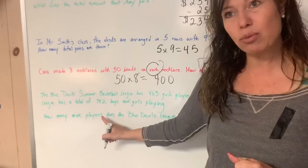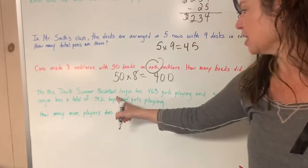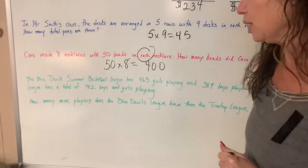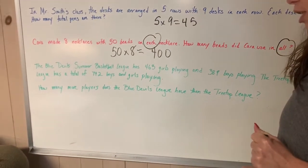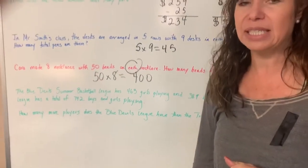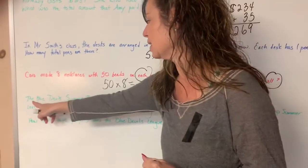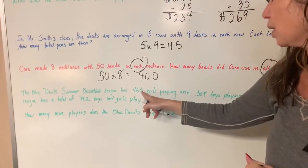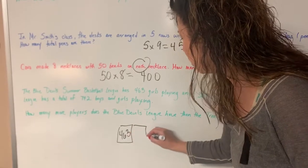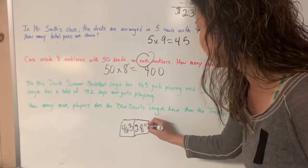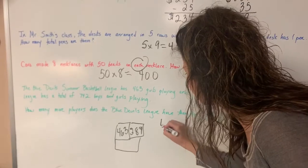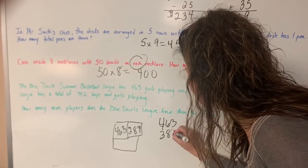The last one is a little tricky. It's like a reading story. The Blue Devils Summer Basketball League has 463 girls playing and 389 boys playing. So I remember my part-part-whole. 389. So I want to know the total for the Devils. So I would add that. Oops. So 463 plus 389.